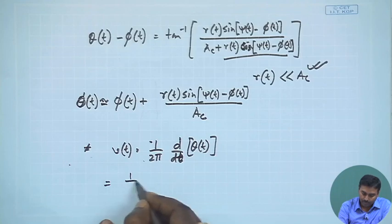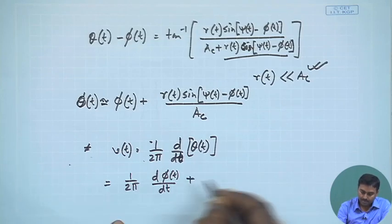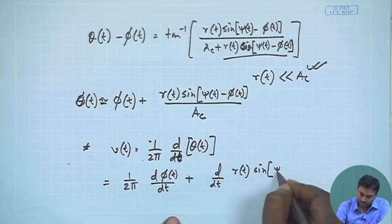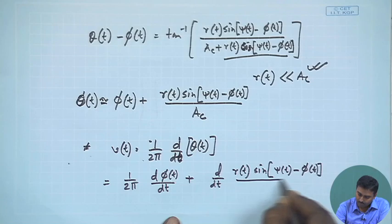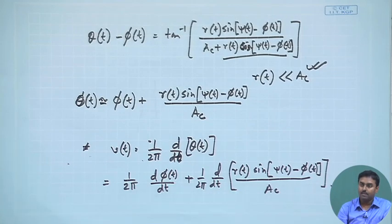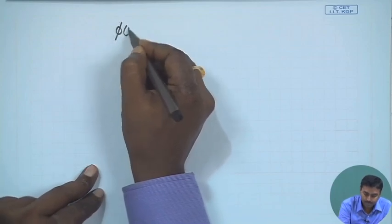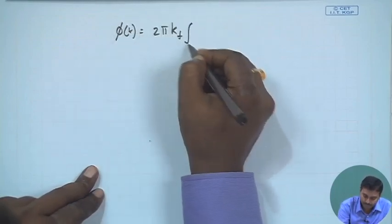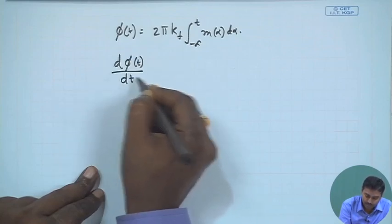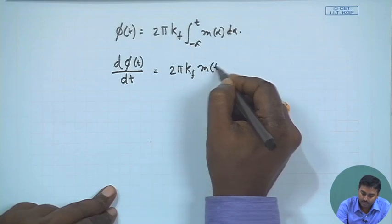Now φ(t) = 2π k_f ∫₋∞ᵗ m(α) dα, so dφ(t)/dt = 2π k_f m(t). Therefore (1/2π) dφ(t)/dt = k_f m(t), which is exactly the message signal — a very good result.